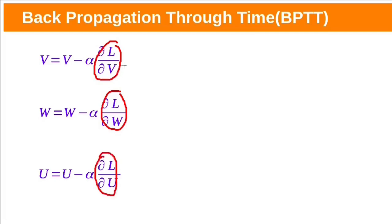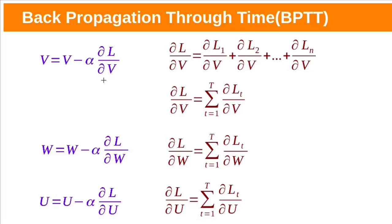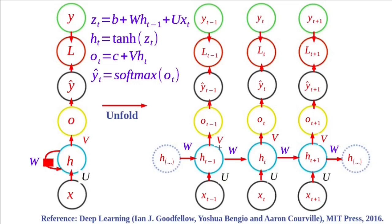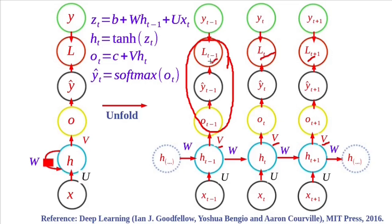Let us see how these gradients will be calculated in RNN. In RNN, the same weights are shared across all time steps. You can see here — in all time steps, the same weight matrix v is used. Similarly for w and u also. We have loss at each time step, and then we will have a gradient at each time step. So the derivative of the loss function with respect to v will be the summation of all these derivatives — the derivative of the loss function at time step t-1 with respect to v, and derivative of Lt with respect to v.